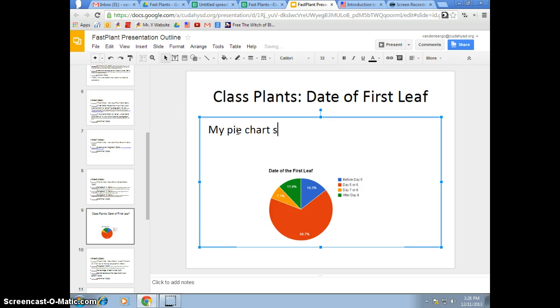My pie chart shows that, I'm going to go back, I'm going to just rethink this. My pie chart shows that 52.4% more plants had their date of the first leaf on days five or six than before day five, period.